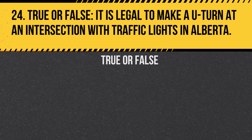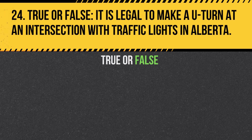Question 24. True or false: It is legal to make a U-turn at an intersection with traffic lights in Alberta. Answer: False. U-turns at intersections with traffic lights are generally not allowed in Alberta.